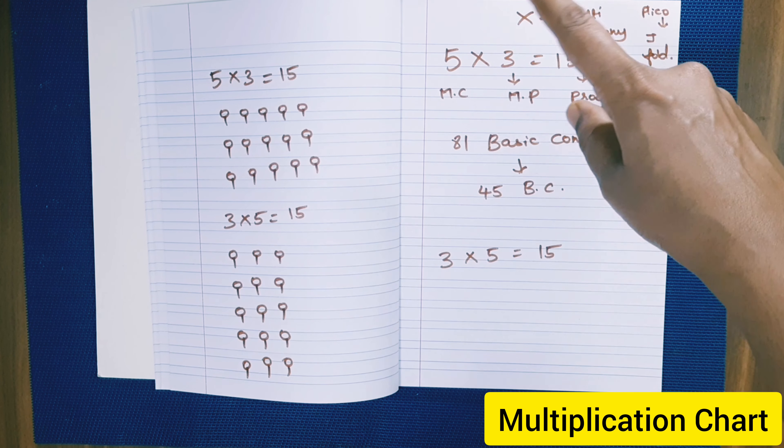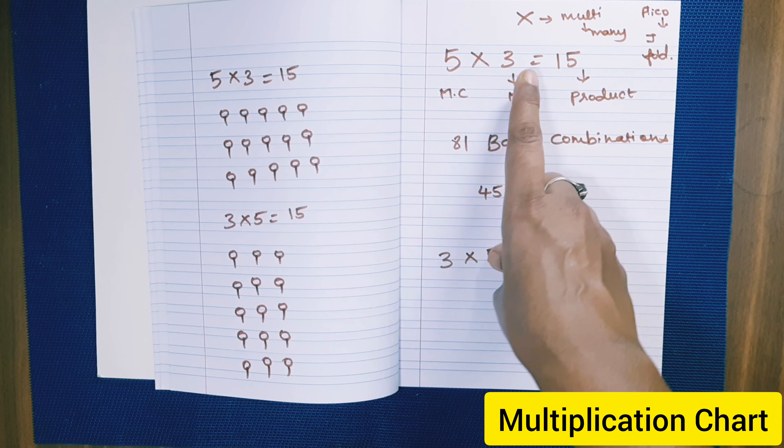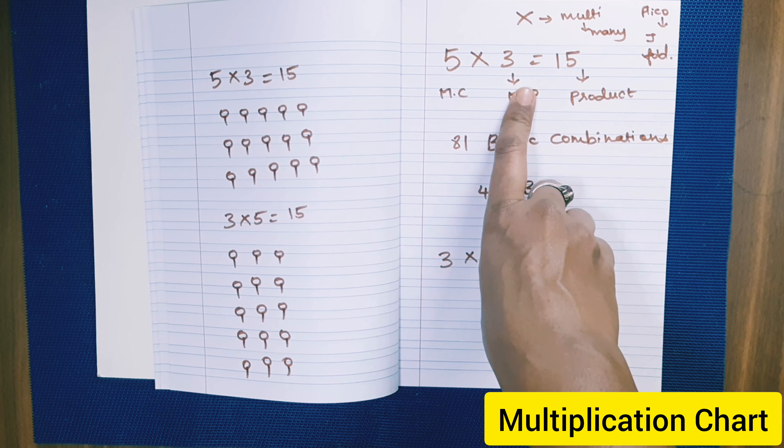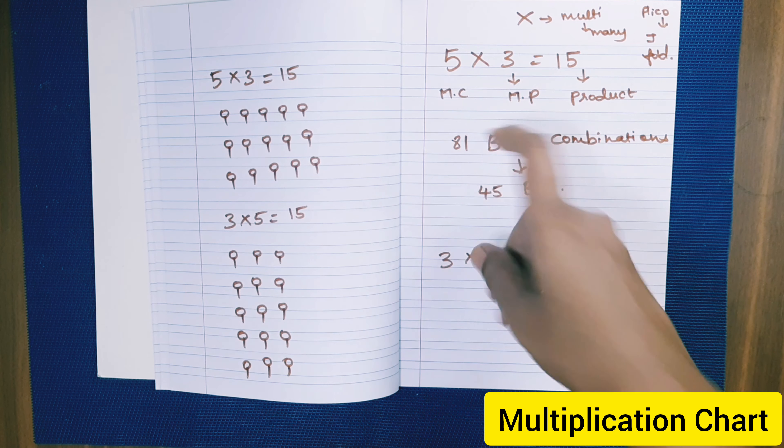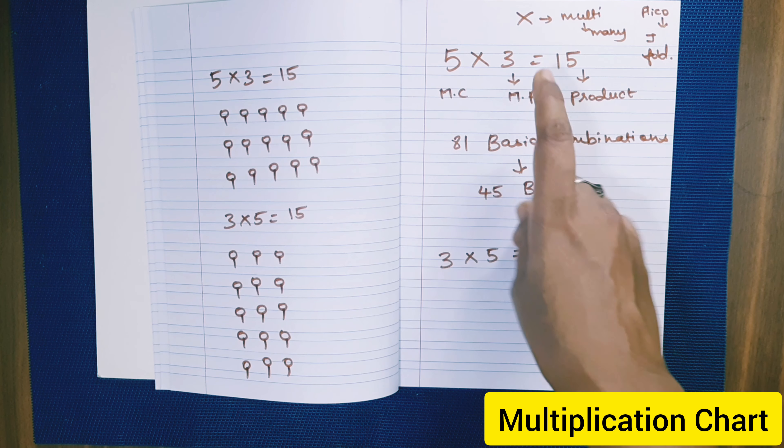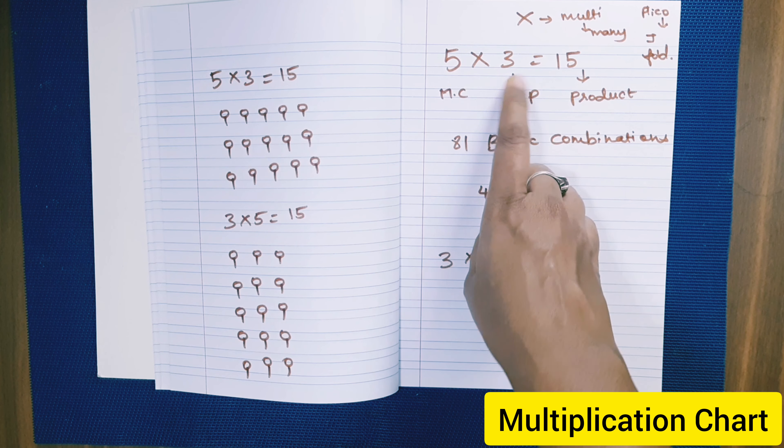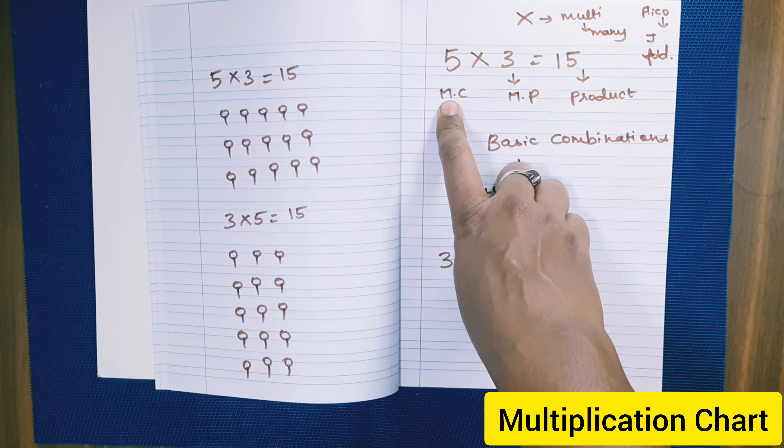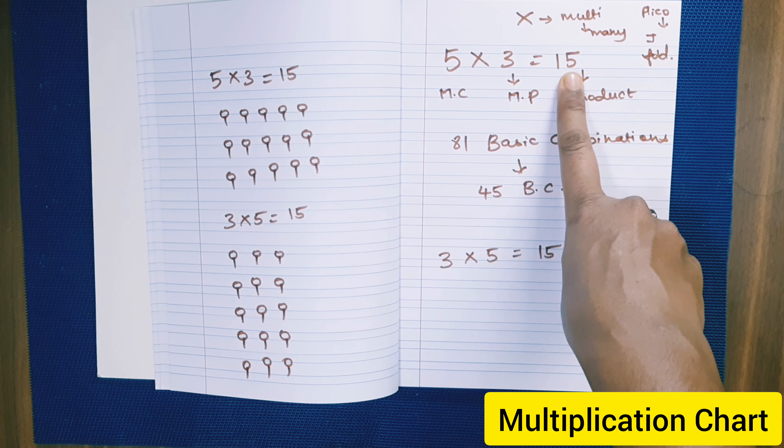Multiplier is the number of times this number is getting multiplied. This is the number of times. Multiplier is the number of times this multiplicand is getting multi-folded. I repeat, multiplier is the number of times this number multiplicand is getting multiplied. So the resultant is called product.